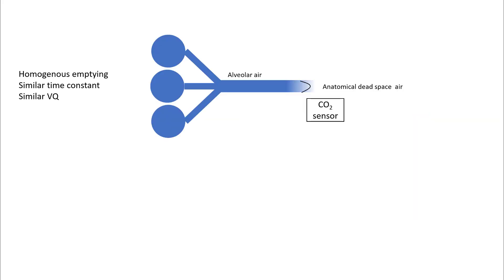Let's understand what really happened here. In this figure we have three alveoli with homogeneous emptying. They have similar time constants and similar VQ ratios. When you exhale, the CO2 sensor initially picks up the dead space air followed by alveolar air. The transition between the alveolar air and anatomical dead space air is pretty sharp.